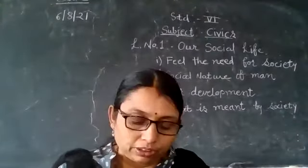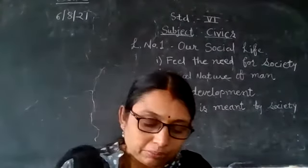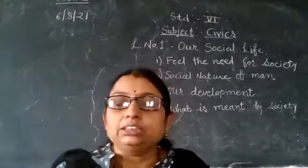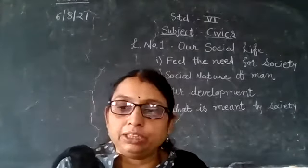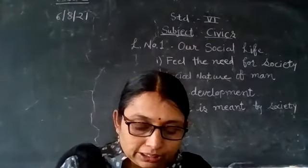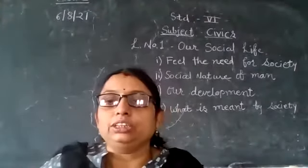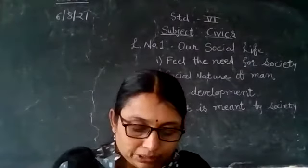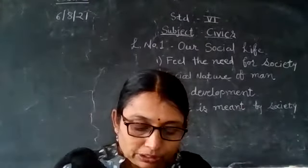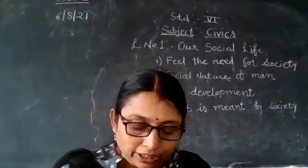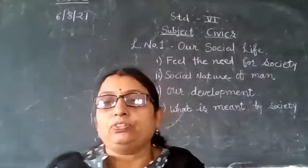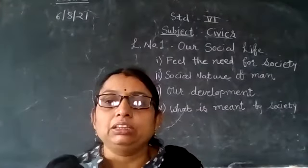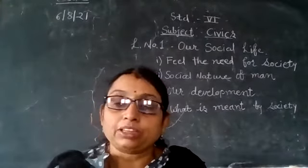Try this — this is your homework. Page number 60. Make a list of all the different things we need every day. Who are the people who make these things and help to bring them to you? Find out the answer in relation to at least five things you use. For example: milk — milkman. Write in this way.